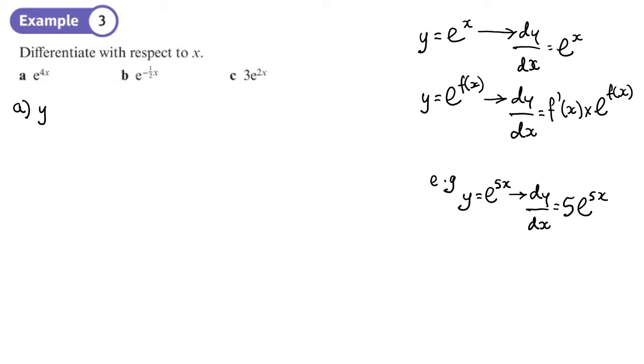So y equals e to the 4x. In this case, f of x is 4x. So dy dx is going to be f dash of x, which is 4, times e to the 4x.